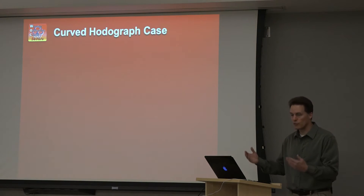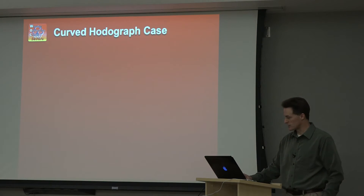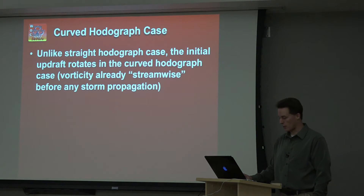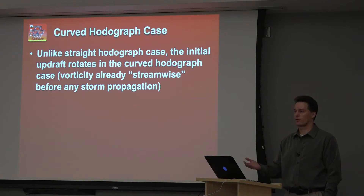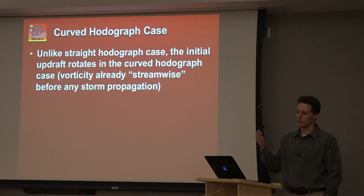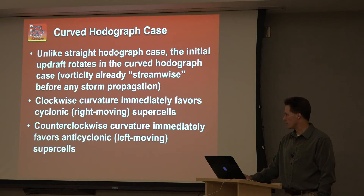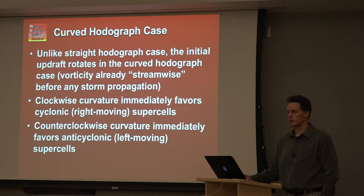That's hopefully a reasonable explanation of splitting storms. When we're talking about tornadic thunderstorms, the curved hodograph becomes even more important — we'll cover that more in upcoming parts of this series. The curved hodograph is a little simpler to start with: the vorticity is initially streamwise, so we don't have to go through any intermediate steps. The initial updraft can rotate cyclonically with a clockwise turning hodograph, which immediately favors the right mover in the northern hemisphere. A counterclockwise turning hodograph would favor the left mover, but thermodynamically that's very difficult because it's related to a cold advection regime.